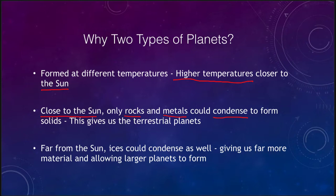So the terrestrial planets, close to the sun, could only form from rock and metal. We see them with high density materials — rocky and metallic — with very little ices or gases. While the Earth does have an atmosphere and a lot of water and ice on it, it's a very small percentage of the overall composition of the Earth. This gives us terrestrial, or Earth-like, planets made primarily of rock and metal.